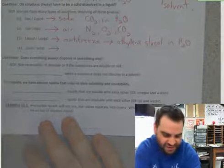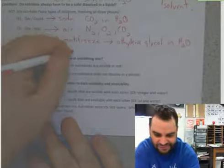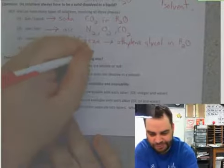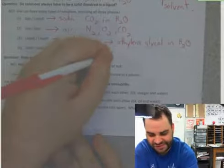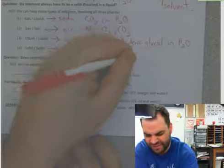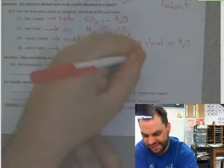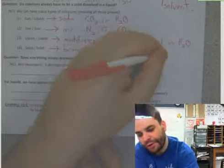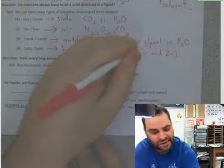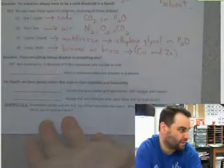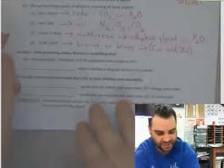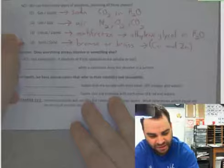A solid and solid would be something like bronze or brass. I think bronze is a mixture of copper and zinc. Another word for a solid in a solid would be an alloy.